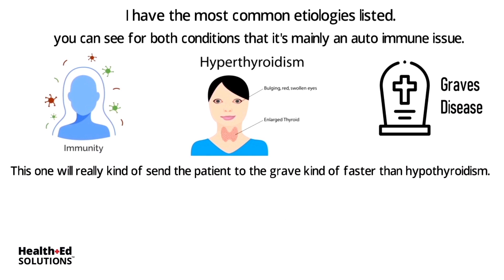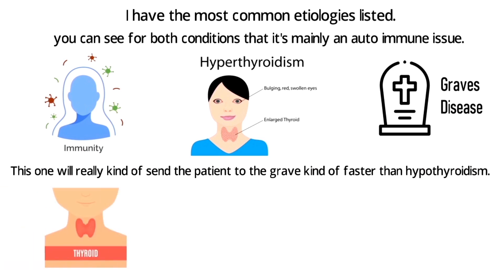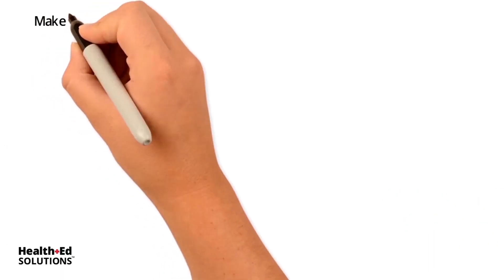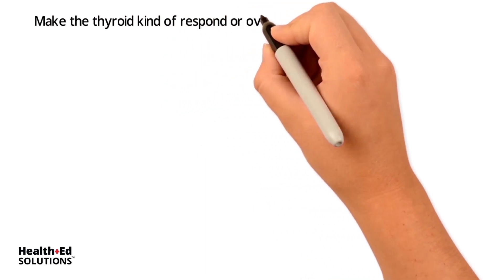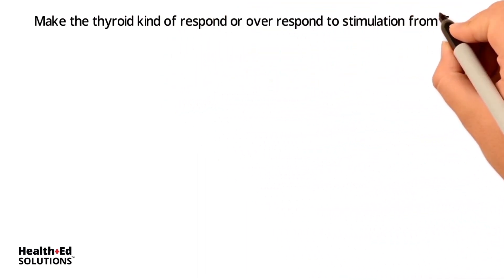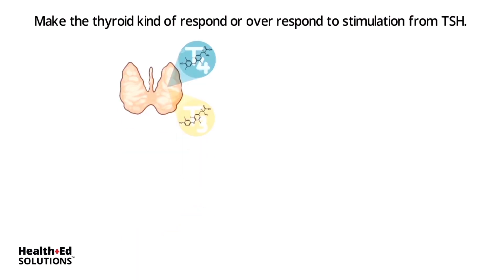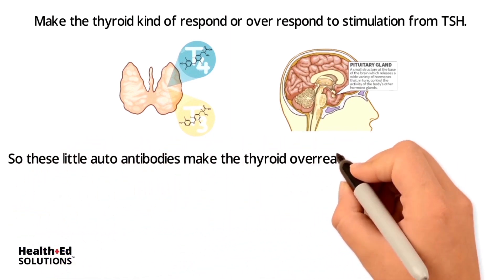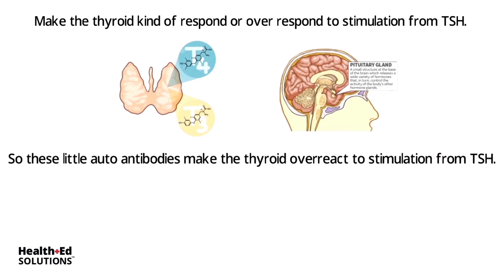Graves disease can result in very significant and severe complications from a thyroid emergency. In Graves disease, there are auto-antibodies produced by your own immune system that actually make the thyroid over-respond to stimulation from TSH — the thyroid stimulating hormone produced by the pituitary gland. These auto-antibodies make the thyroid overreact to TSH stimulation, and the thyroid produces way too much T3 and T4.